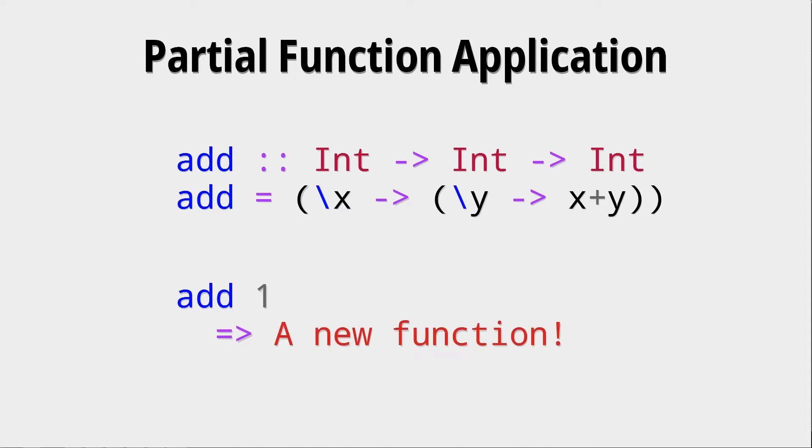So what we get is a new function. What is its type? Well its type of course is int to int because what we get back is the function which takes this y argument which already has the definition of x replaced, because now where before we had this free variable x we now have the fixed variable one.